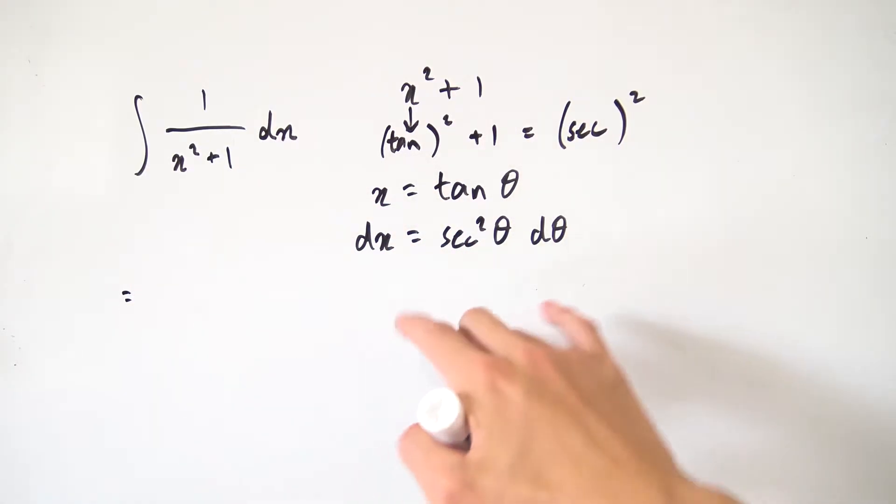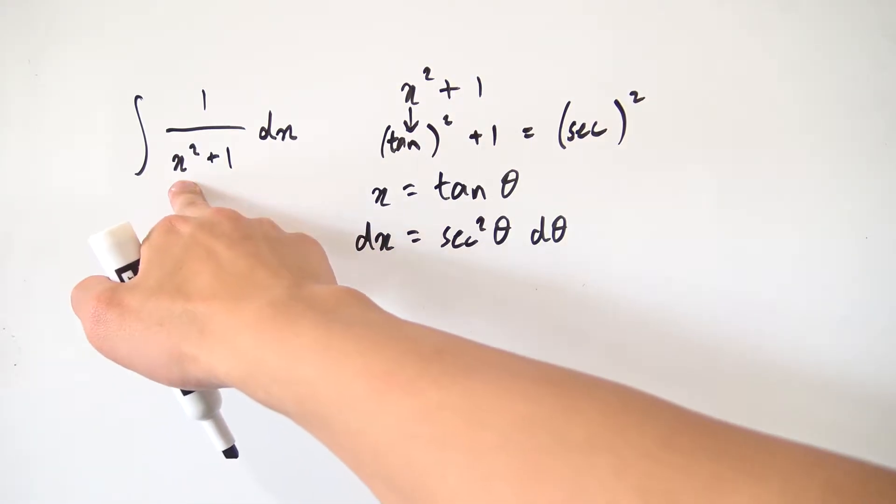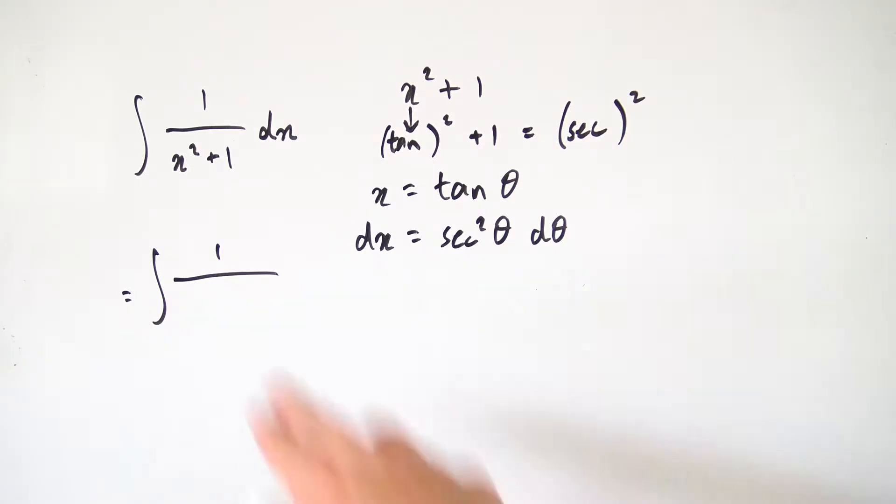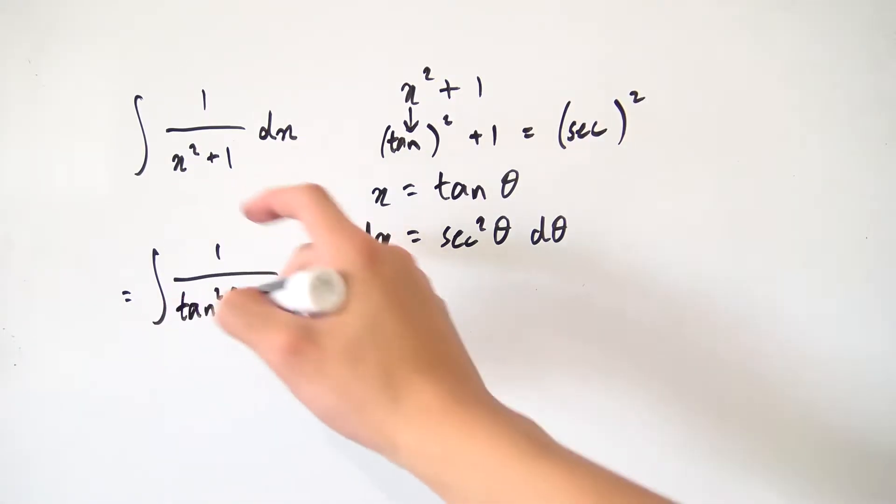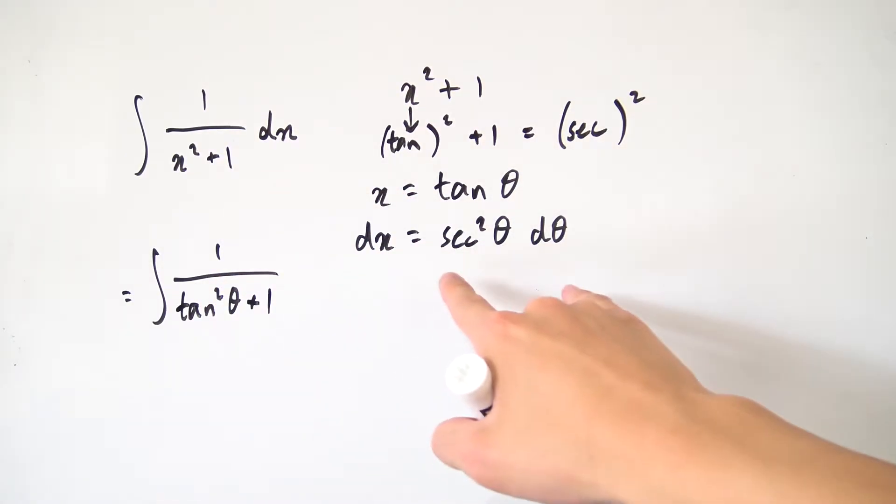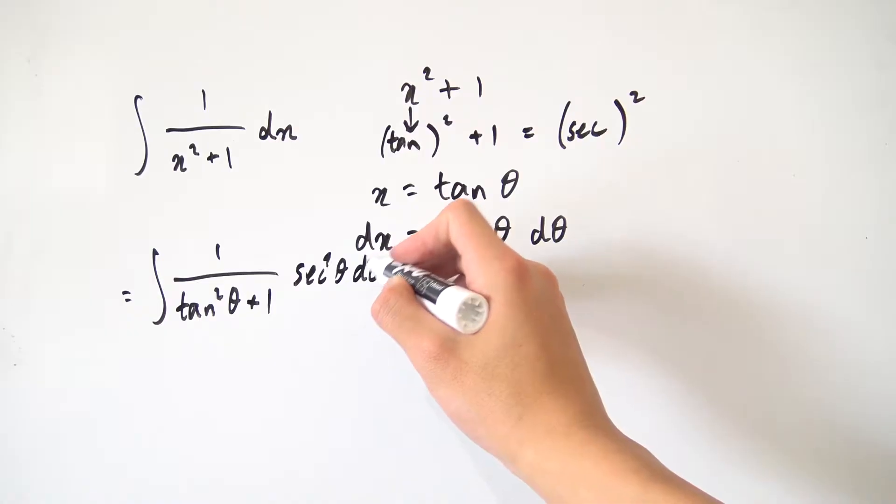So we have our dx part and we have our x part and now we're ready to throw all that stuff into our integral. So now we have the integral of 1 over and now remember our x will turn into the tangent squared of theta. So we have x squared right here, I'm going to write that as tan squared of theta right now. And we still have this plus 1 right here. And for our dx, that actually turns into secant squared of theta times d theta.